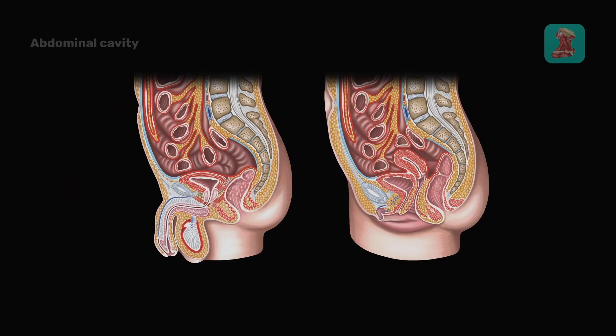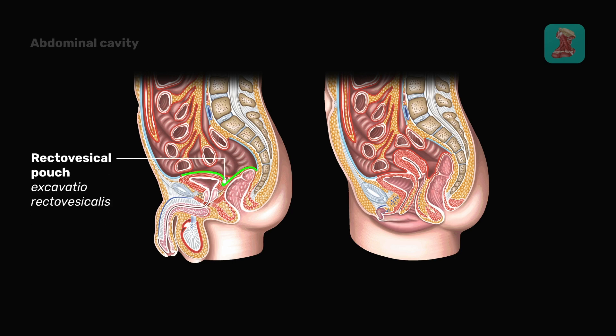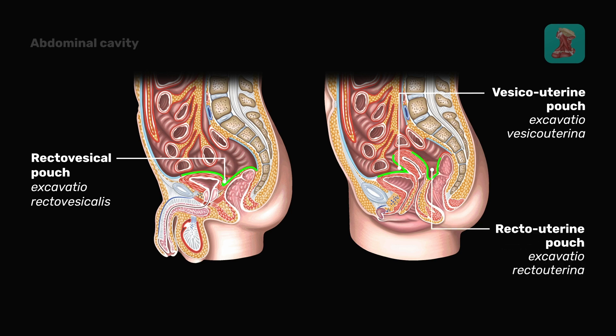Where the peritoneum passes from the bladder to the rectum, men have the rectovesical pouch. In women, the peritoneum passing from the bladder to the uterus forms the vesico-uterine pouch, and moving from the uterus to the rectum, it forms the recto-uterine pouch.